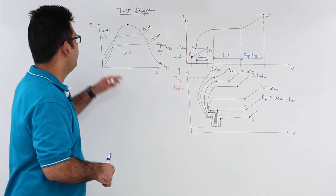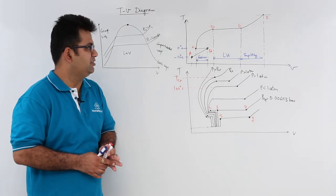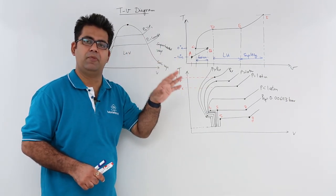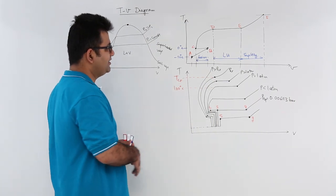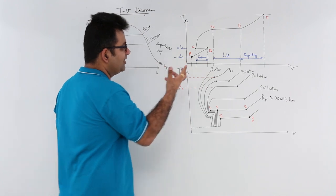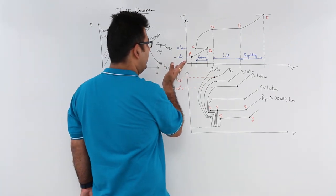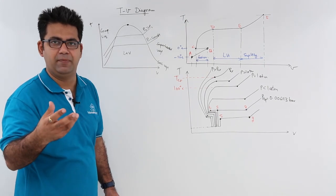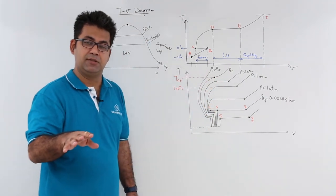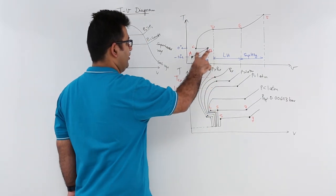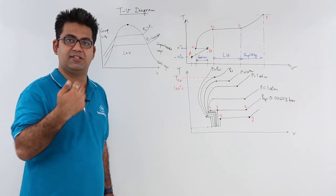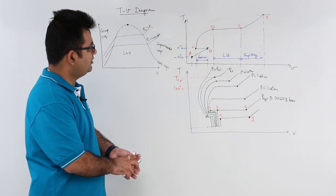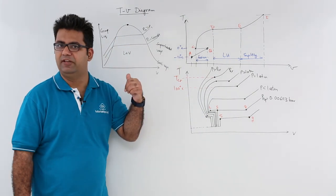Now let's understand the temperature-volume plot. This is somewhat similar to what we did in the phase change phenomena of a pure substance. You have ice at minus 10 degrees Celsius. When you provide sensible heating, the volume increases as the ice starts to get heated up and it starts to expand a bit. During the melting process, a volume reduction occurs because water is heavier compared to ice, and then the volume keeps on increasing throughout.